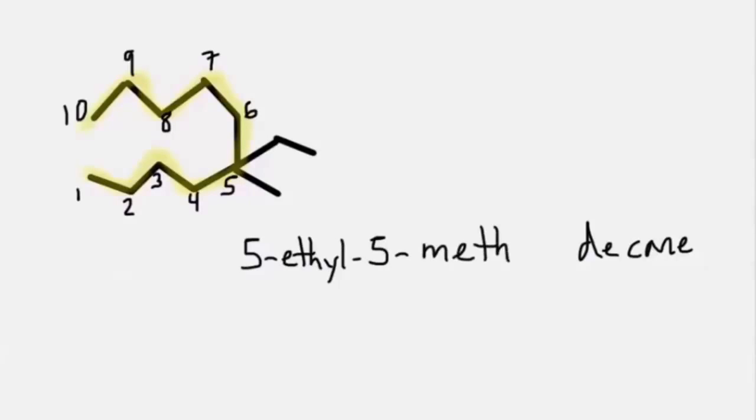a methyl group and an ethyl group, the lowest possible carbon number and that comes from a counterclockwise fashion. This gives both substituents a carbon number of 5, so the full name of this compound is 5-ethyl-5-methyldecane.